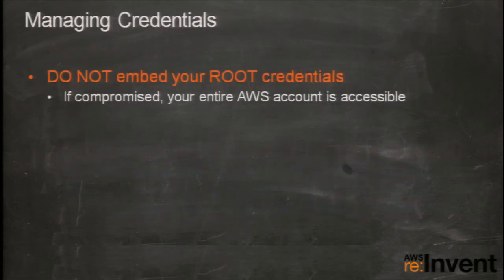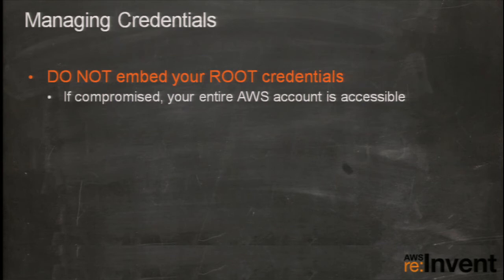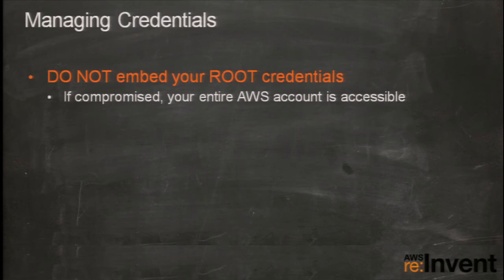Now let's talk about managing credentials. As you saw in our samples, to make requests against AWS services, you need an access key and a secret key. In a mobile environment, the application is actually running in the user's hands, so how do you get credentials into the device securely? You don't want to embed your root credentials into your application code — if those keys were extracted, your entire AWS account would be accessible, and it is easy for information to be extracted from applications.